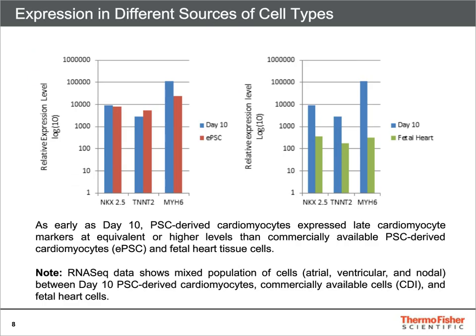Here we show a comparison of cardiomyocytes differentiated using the Gibco PSC Cardiomyocyte Differentiation Kit versus other cell sources. On the left, a comparison is made between day 10 cardiomyocytes generated using the Thermo Fisher kit versus a commercially available engineered PSC-derived cardiomyocyte denoted as EPSC in red. These data show equivalent expressions of NKX2.5, TNNT2, and myosin heavy chain 6. On the right, a comparison versus fetal heart-derived cardiomyocytes shows higher expression of NKX2.5, TNNT2, and myosin heavy chain 6 in cardiomyocytes generated using the Thermo Fisher kit.